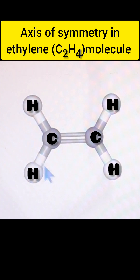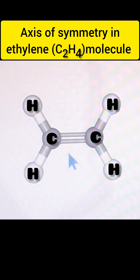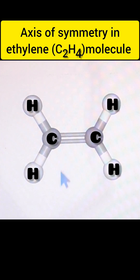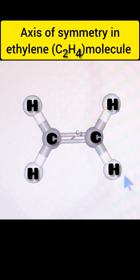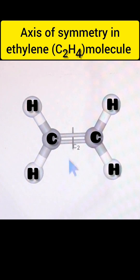This is the model of the ethylene molecule. When talking about axes of symmetry in the ethylene molecule, there are a total of 3 C2 axes present. The first one is passing through the carbon-carbon bond like this.